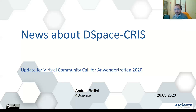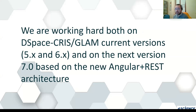Hello, thanks Pascal for the introduction. I'm very happy to join virtually my friends in Germany and we resume from where we left last year in Bamberg and also in Hamburg from Open Repository. So we are working very hard on two different versions: one is the current version of DSpace CRIS, that is version 5 and 6, and the other is the next version, version 7, that will be based on the new Angular REST architecture. I want to give you a review of what is happening in the last 12 months.